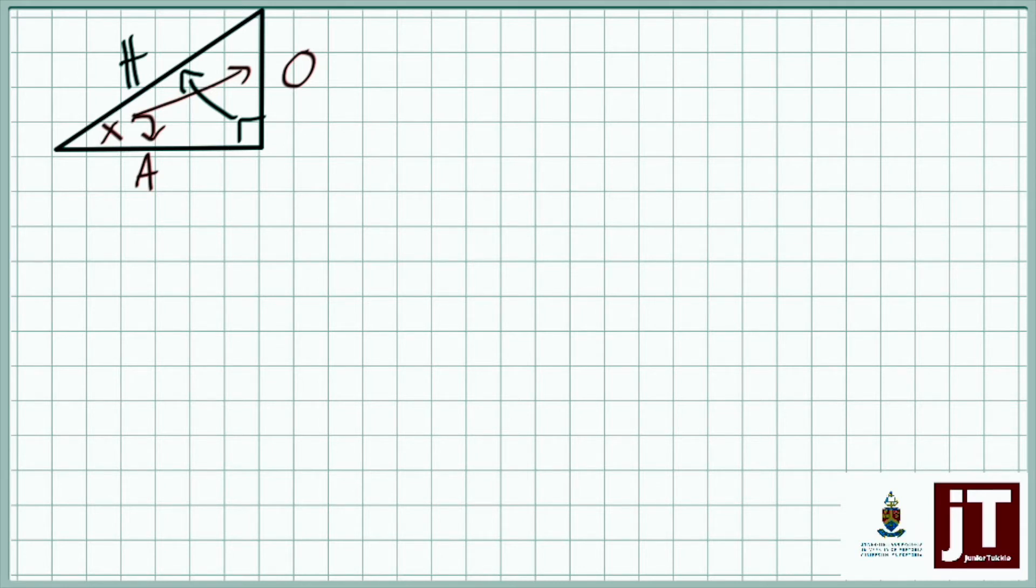Now if I look at this triangle with the vantage point at the top, you quickly think where would the hypotenuse, the opposite, and the adjacent be? Well, the opposite is going to be now your horizontal side. Your adjacent will be your vertical side and the hypotenuse will still be opposite the 90 degrees.